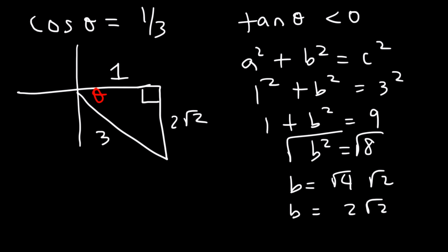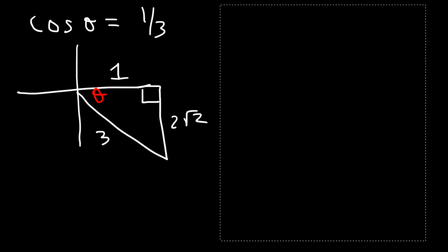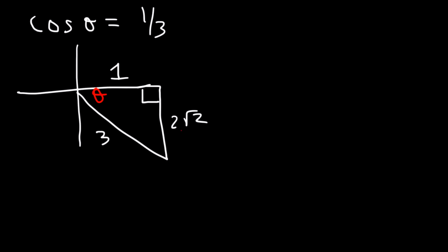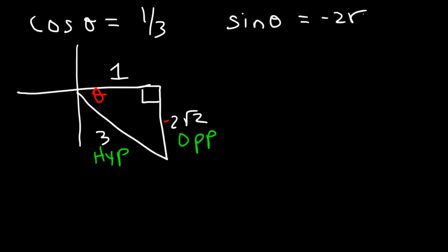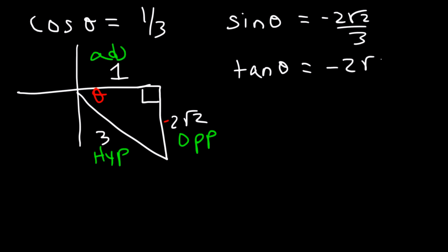Now in quadrant 4, Y is negative. Now we can find everything else. Sine theta is going to be equal to the opposite side divided by the hypotenuse, so sine theta is negative 2 square root 2 over 3. Now we already have cosine. Tangent is opposite over adjacent, so it's negative 2 square root 2 over 1. Secant is the reciprocal of cosine — so if cosine is 1 over 3, secant is 1 divided by 1 over 3, or simply 3.